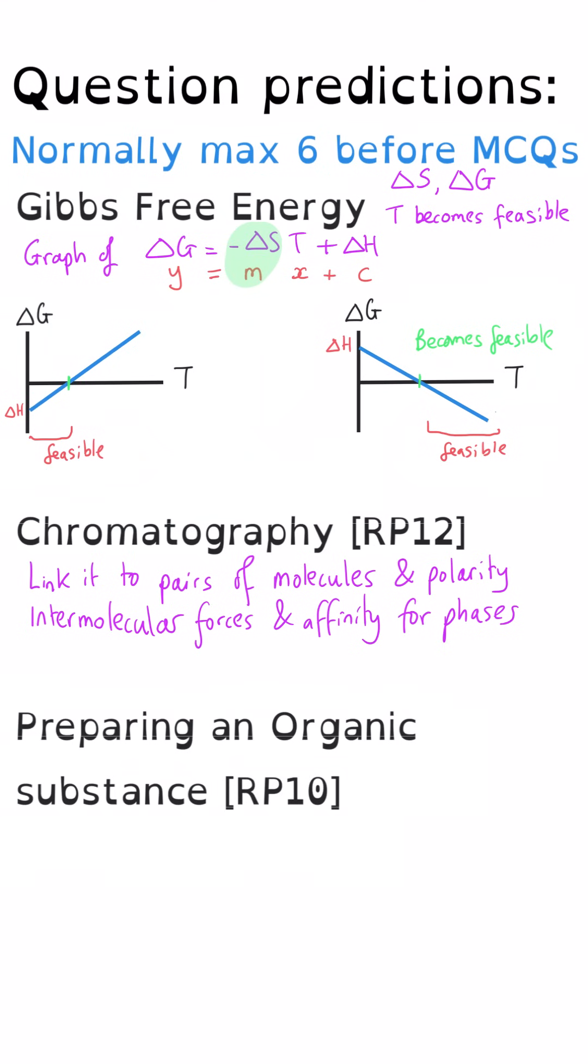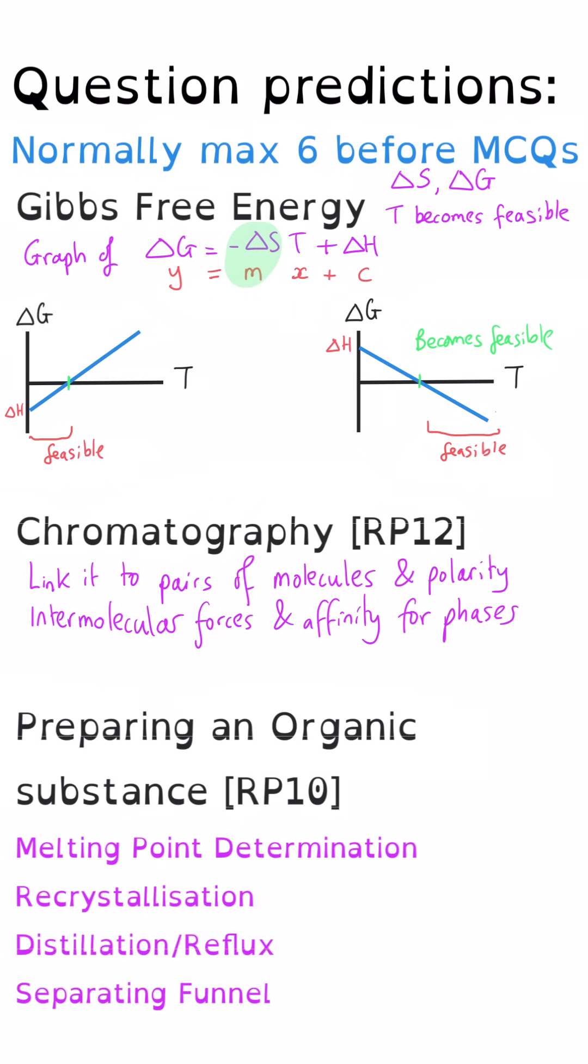Thirdly, I think an organic synthesis required practical, so required practical 10. Melting point determination, recrystallization, distillation, separating funnel, suction filtration. All those things haven't been assessed so far. They could be woven together into a paper three question, possibly producing a molecule that hasn't been the focus of any questions so far. So there's not been anything about amines and not been much about carboxylic acids and aldehydes and ketones. They can also make this a larger question by linking this to atom economy and percentage yield, which haven't been asked about yet either.